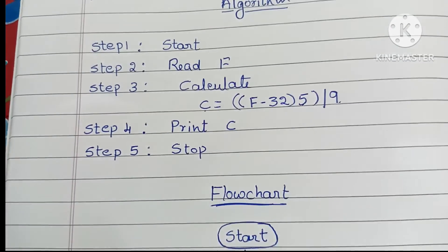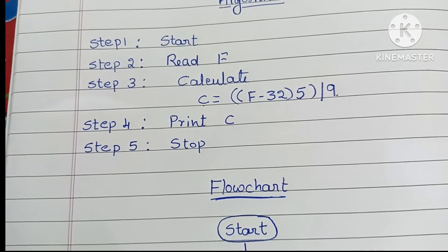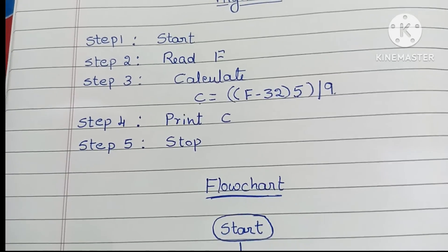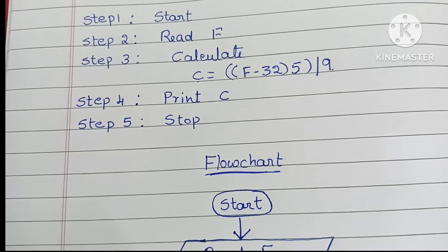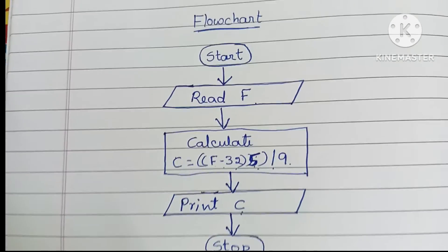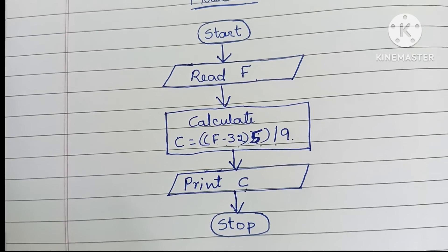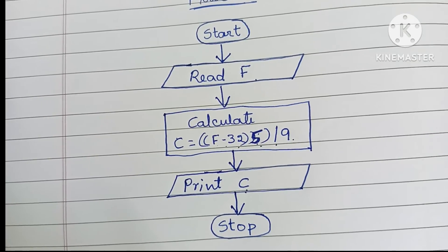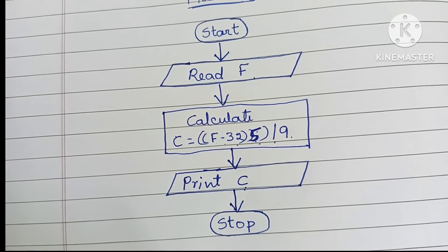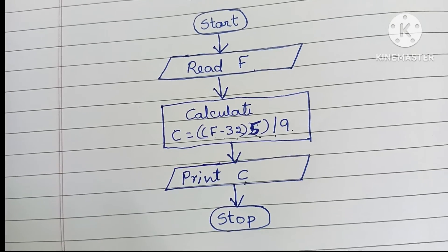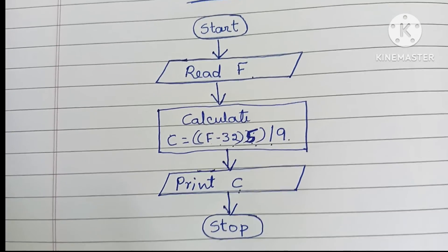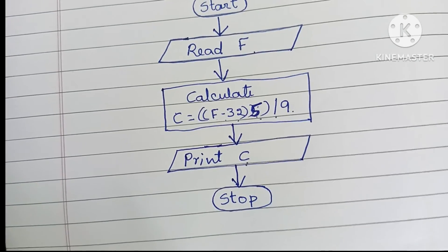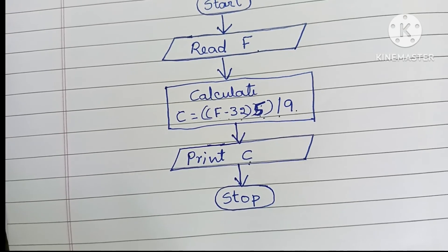To recap: the algorithm has Step 1 start, Step 2 read F, Step 3 calculate C = (F - 32) × 5 / 9, Step 4 print C, and Step 5 stop. This is the complete algorithm and flowchart to convert temperature from Fahrenheit to Celsius.